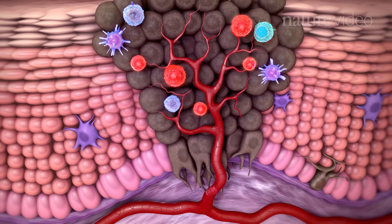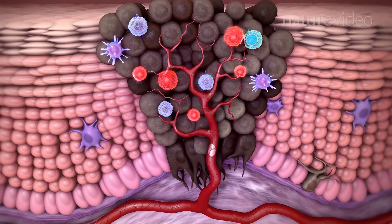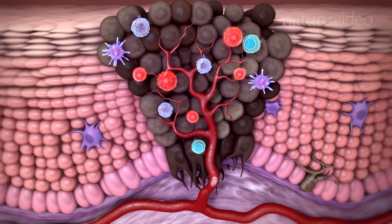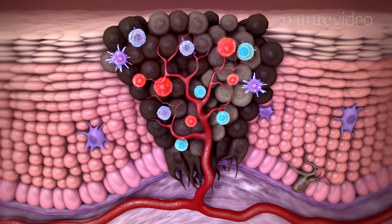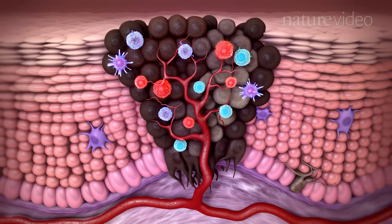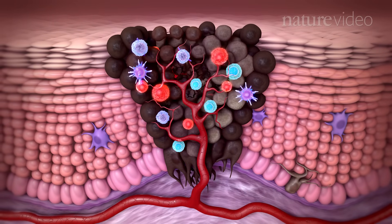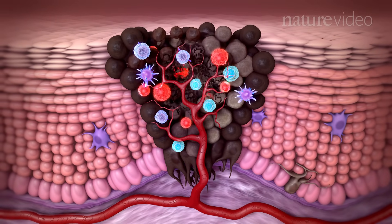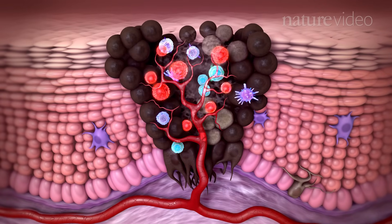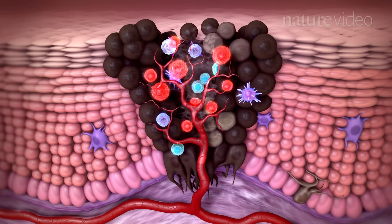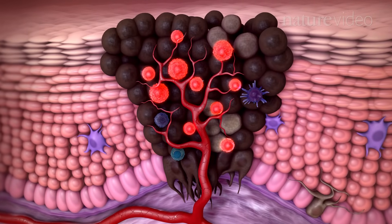As the tumour evolves, genetic changes occur that can give some tumour cells a survival advantage. This means tumours are often heterogeneous. For instance, tumour cells may no longer express the molecules that are sensed by the killer immune cells. As the immune system continues to kill the tumour cells it can recognise, the cells it can't sense become more prevalent. This is immuno-editing, and it leads to the emergence of a tumour that can't be detected by the immune system.